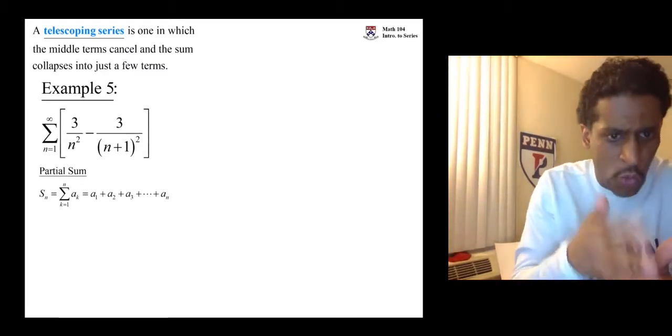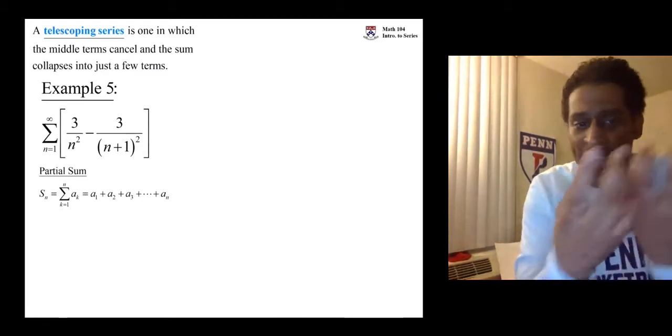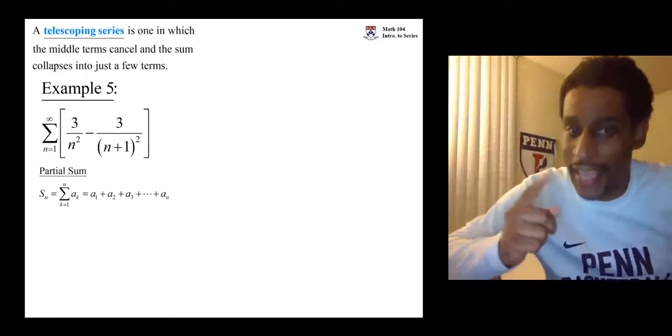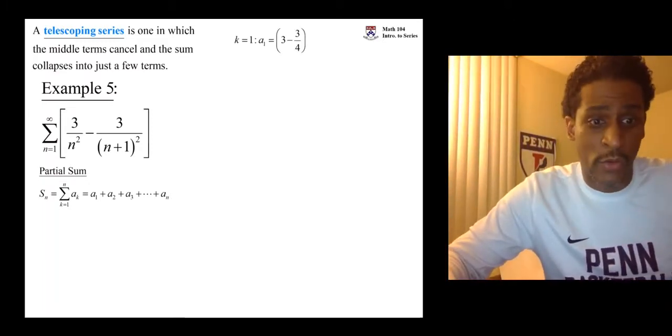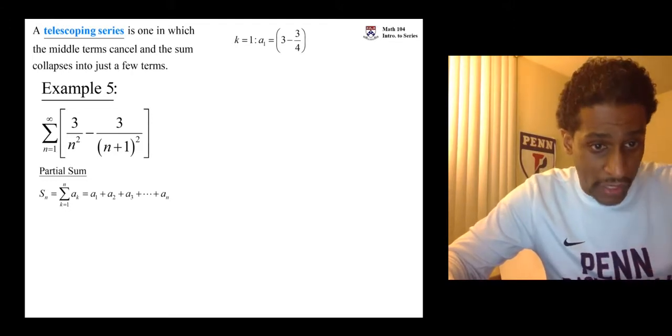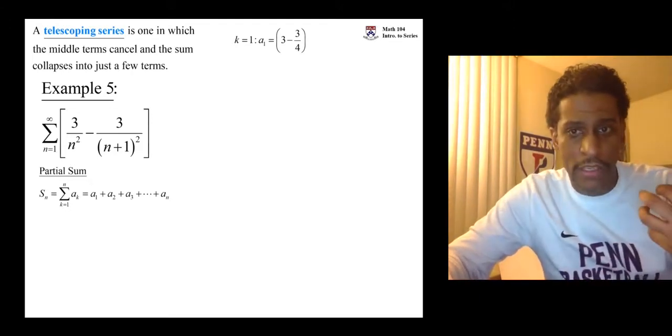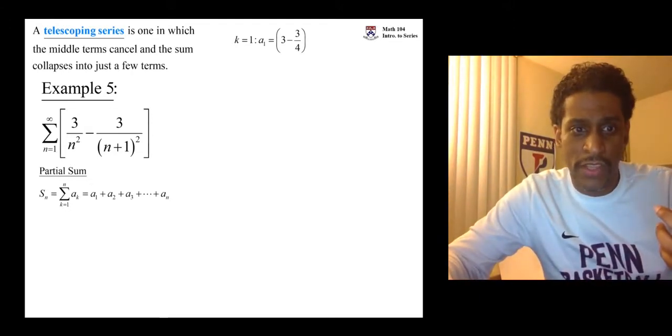We have to introduce this new variable counter basically k. And so we go from k equals 1 to n. We add up a1, a2, a3, and we stop when we get to an. And so let's look at k equals 1. What does a1 look like? If you plug a 1 into that, you get 3 minus 3 fourths.